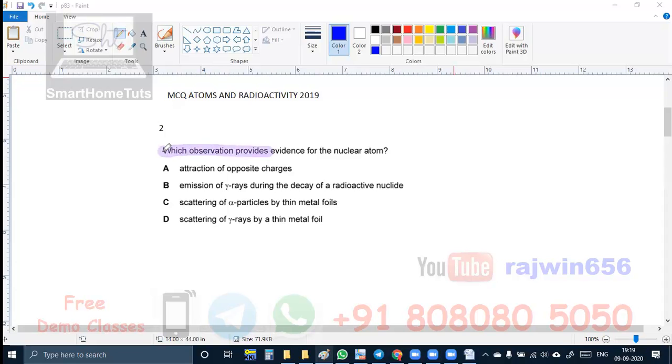Second question, which observation provides evidence for the nuclear atom? Attraction of opposite charges, emission of gamma rays during the decay of radioactive nuclei, scattering of alpha particles by thin metal foil, scattering of gamma rays by thin metal foil. We have done this Rutherford's experiment, it is scattering of alpha particle which gives us the evidence of nuclear atom.